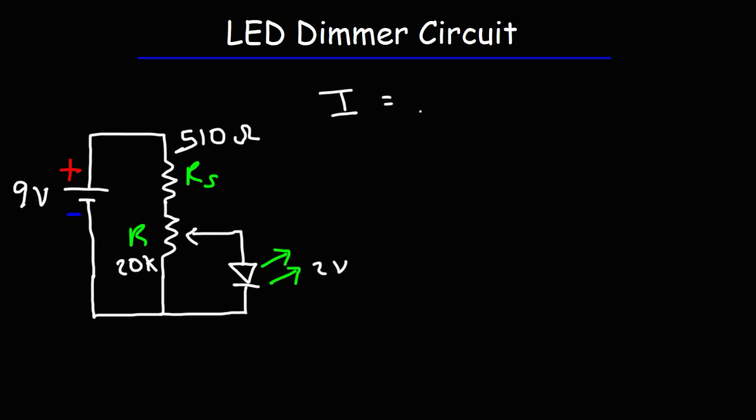The current that flows in the LED is going to be the voltage of the battery minus the voltage drop of the LED, which we'll call VD for the voltage across that diode. That's a light emitting diode, divided by the total resistance in the circuit.